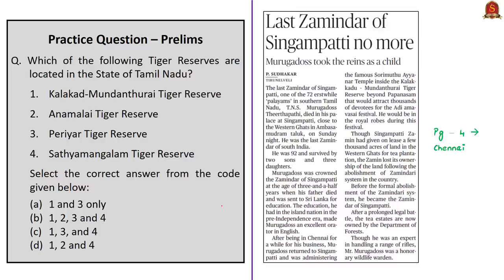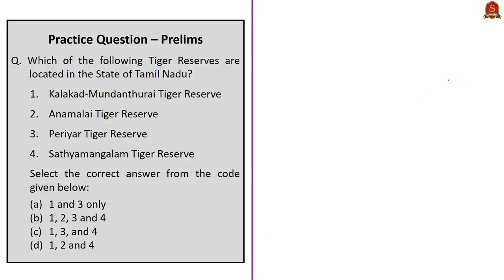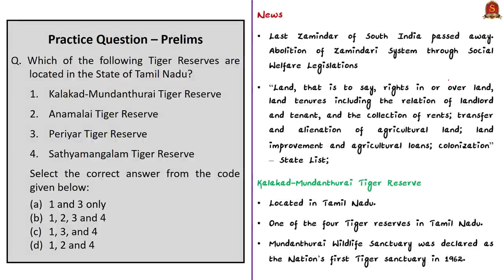The next news article discusses that the last zamindar of a place in southern Tamil Nadu has passed away. It states the zamindar lost ownership of lands as a result of the abolition of the zamindari system, and also that the zamindar was administering a temple located inside the Kalakkaadu Mundandurai Tiger Reserve. During the pre-independence era, the zamindari system was in operation in many parts of India, with large parcels of land under the ownership of zamindars. In some cases, rulers gifted entire villages to zamindars.